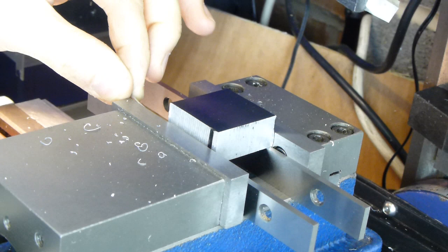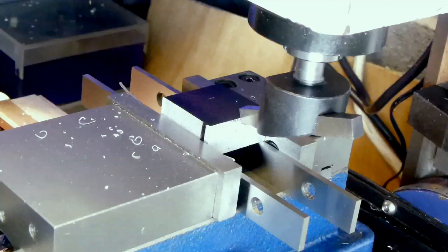With the good edge up against the fixed jaw and the rough edge packed with a piece of soft wire, I cleaned off the black anodized top surface to make marking out easier.